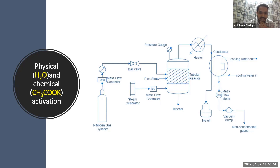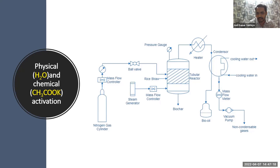For chemical activation, we used a wet impregnation technique. Potassium acetate was diluted in one liter of water and then mixed with rice straw, stabilized for a maximum of 12 hours, and fed into the reactor. A similar process was continued as in the physical activation. During activation, we collected condensable gases as bio-oil and found approximately 22% alcoholic compounds, which can be utilized in chemical industries such as textile and pharmaceutical industries, where there is high demand in India.